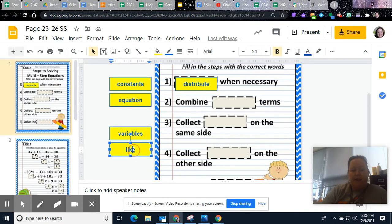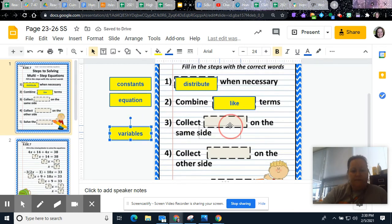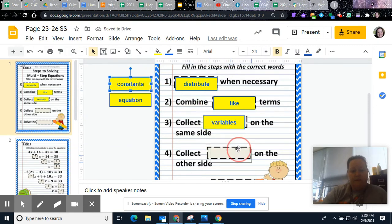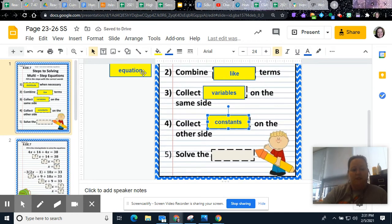And then you're going to combine like terms. And then you're going to collect the variables on one side. And then the constants on the other. And then once you've done that, then it's going to be a super fast, quick equation to solve.